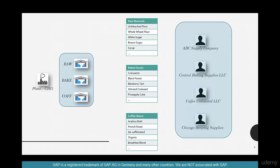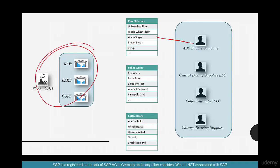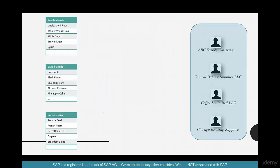In the previous videos we have seen vendor master and material master. Not all vendors supply all the materials — some vendors supply some materials and others supply different materials. So where is the relationship between the vendor and material documented? If I want to know who can supply whole wheat flour, I need that information handy. And how much is it going to cost for this vendor versus that vendor?